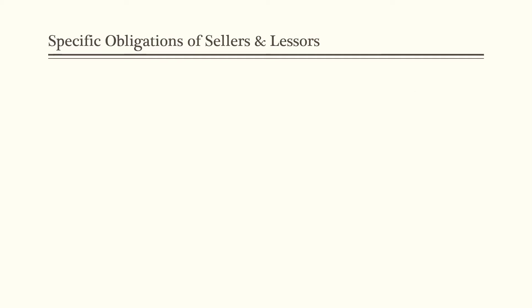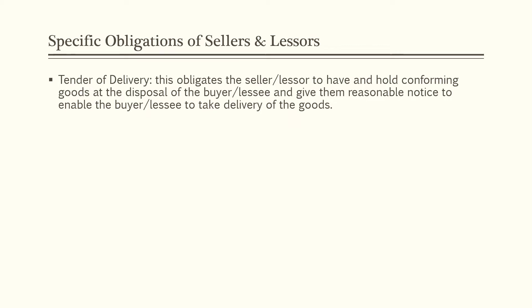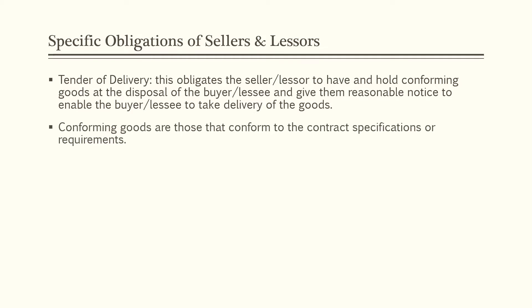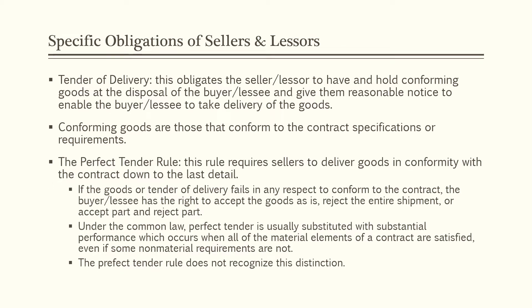Next we'll discuss the specific obligations of sellers and lessors. The first is tender of delivery, which obligates the seller or lessor to have and hold conforming goods at the disposal of the buyer or lessee and give them reasonable notice to enable the buyer or lessee to take delivery. Conforming goods are those that conform to the contract specifications. There is also the perfect tender rule under the UCC, which requires sellers to deliver goods in conformity with the contract down to the last detail. If the goods or tender of delivery fails in any respect to conform to the contract, the buyer or lessee has the right to accept the goods as is, reject the entire shipment, or accept part and reject part.